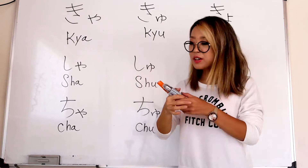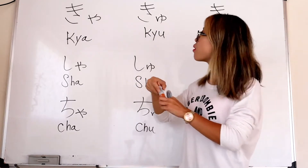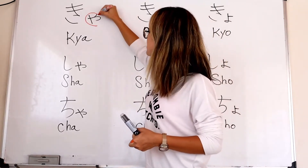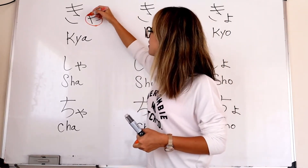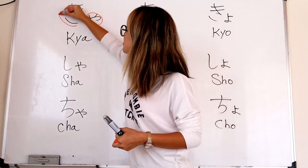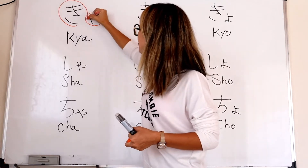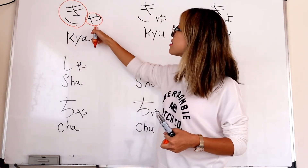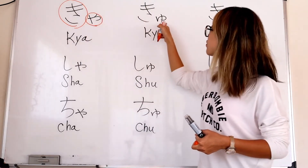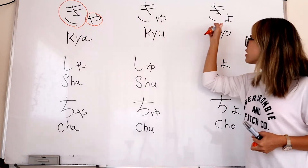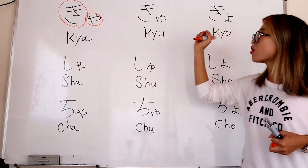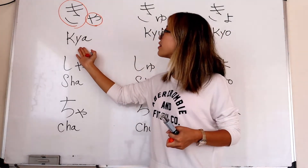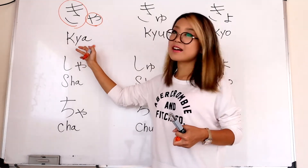This hiragana you can write down smaller. This is smaller, this is a normal size — like almost quarter size. If you write it down this way, this is not pronounced as 'ki' and 'ya' separately. Together, it becomes 'kya'.